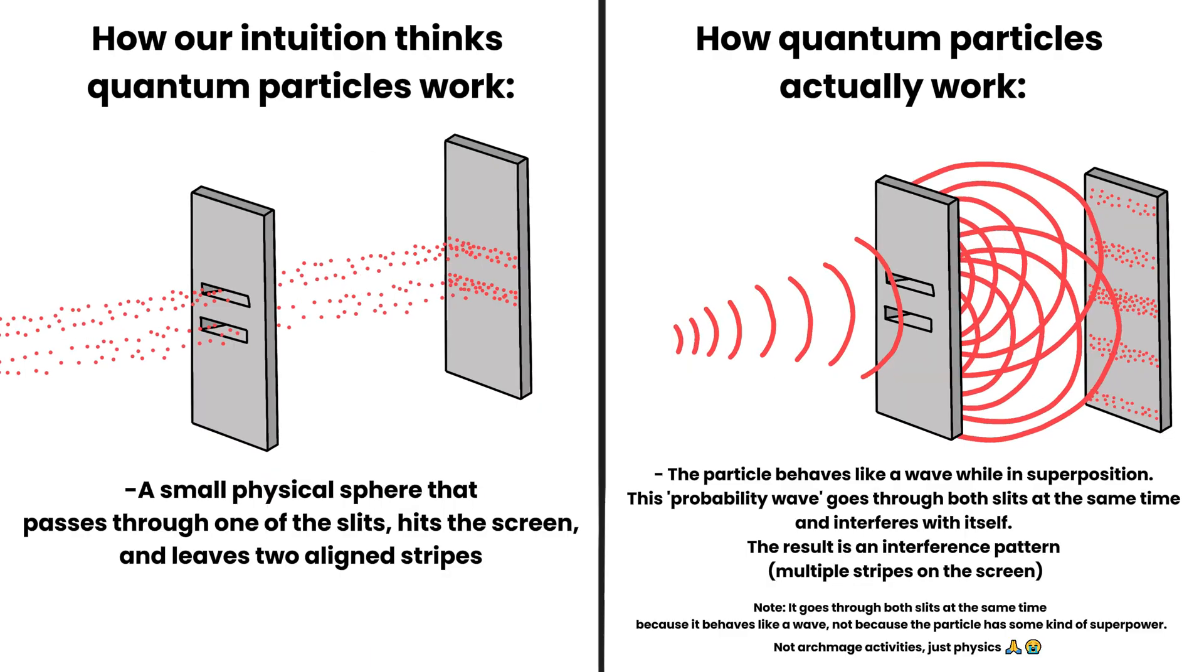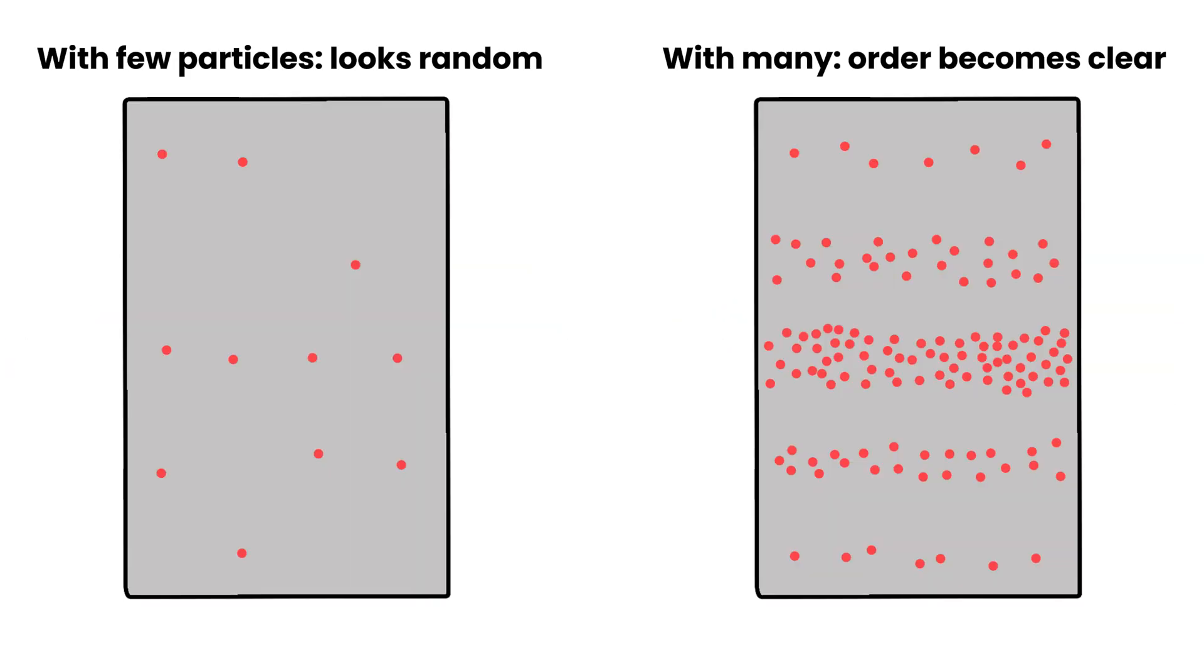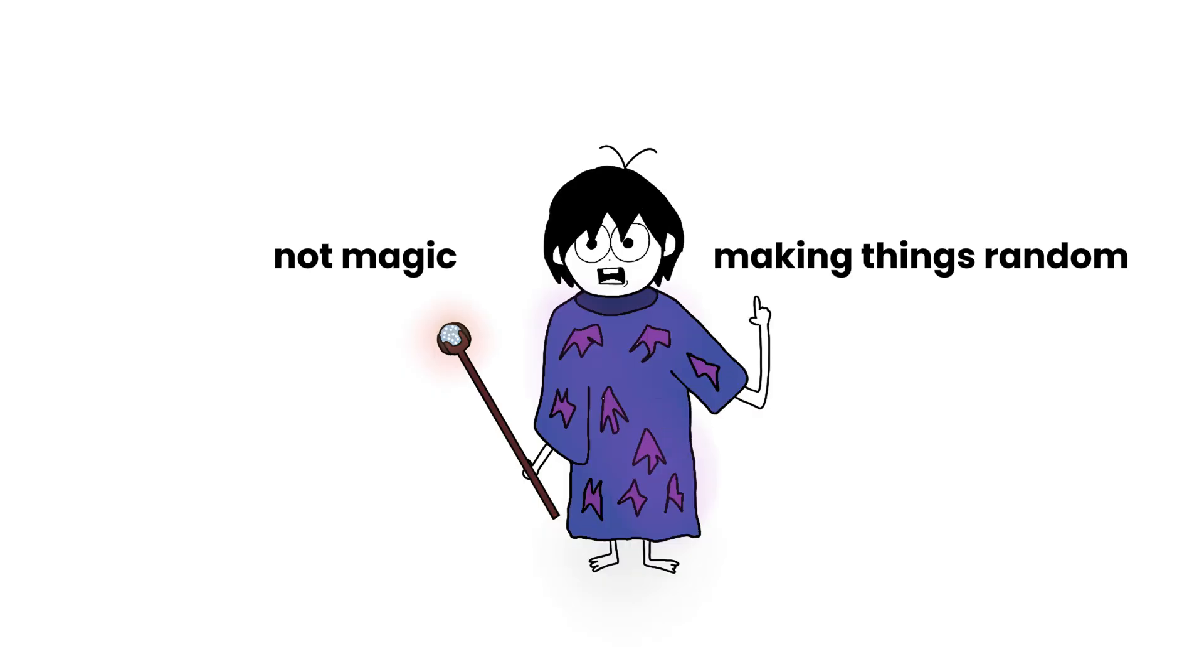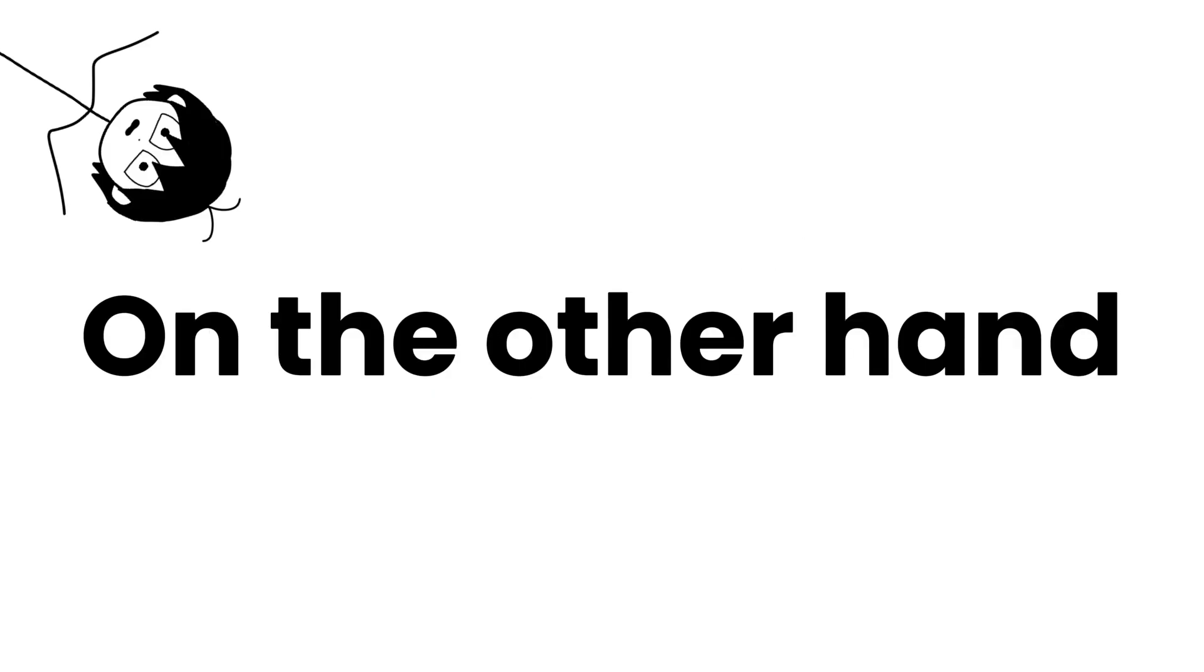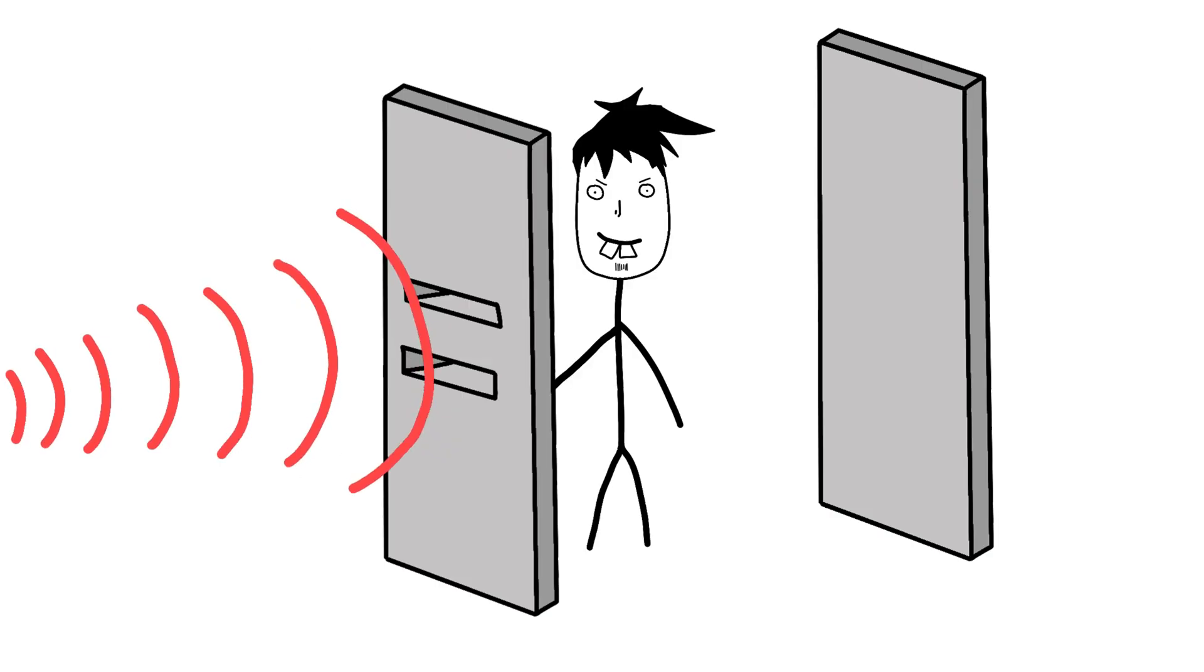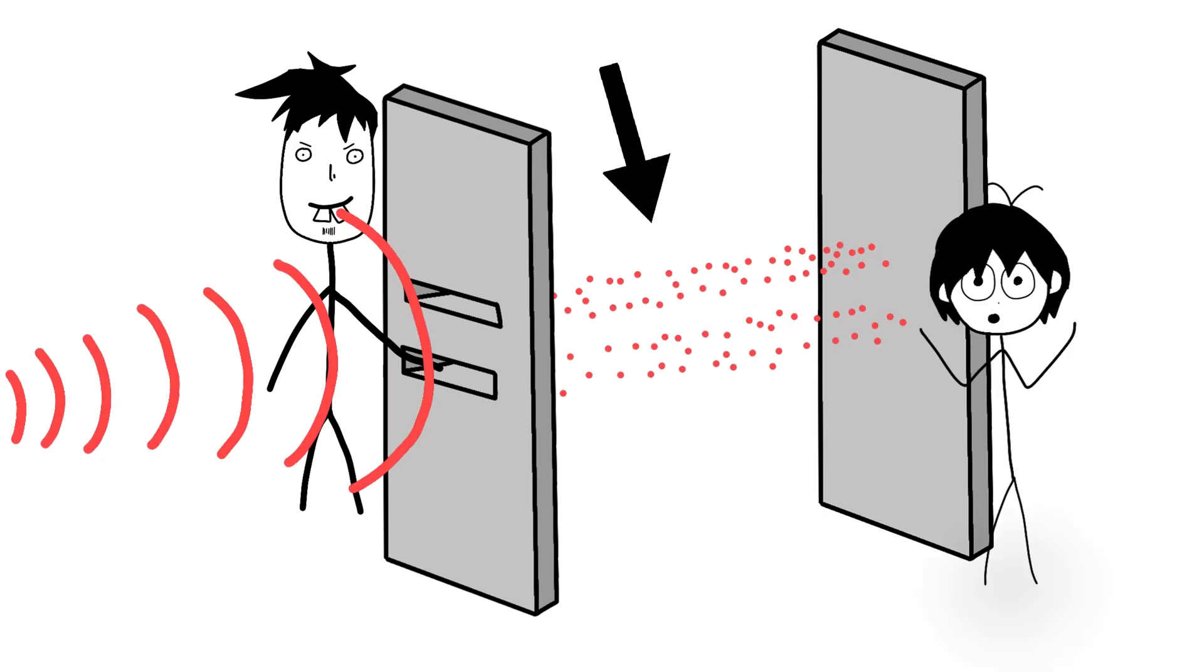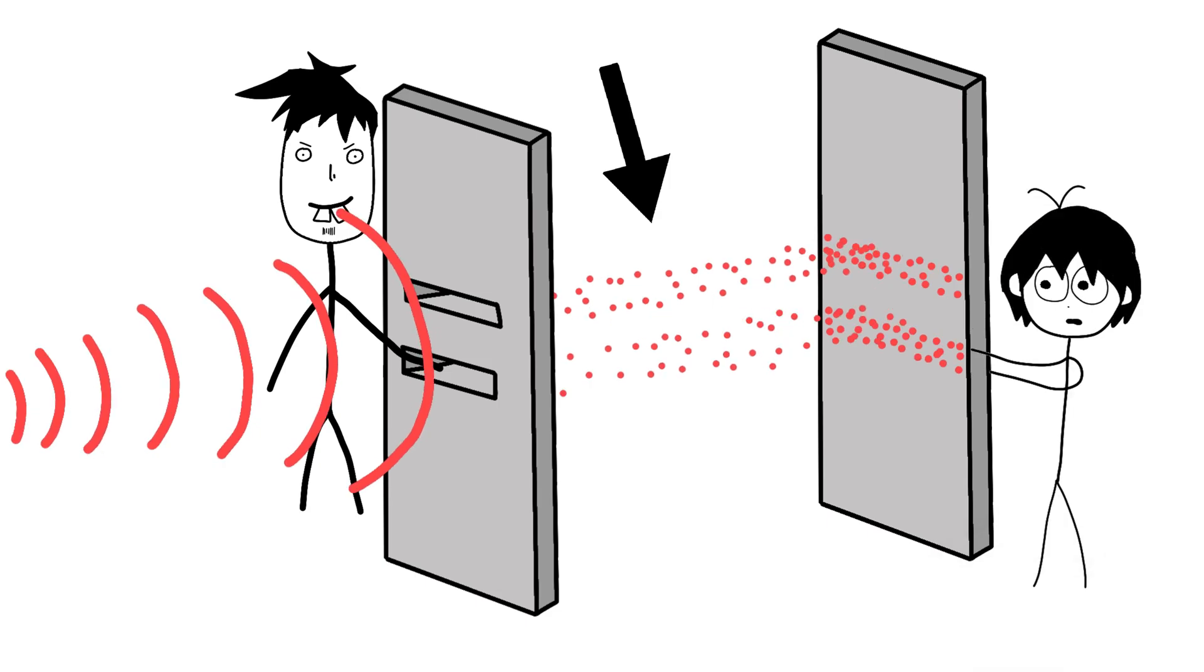Almost like the particle didn't go where it was supposed to. But the more particles you shoot, the more it becomes clear that there's order in the system, not magic making things random. On the other hand, if there is measurement, meaning some interference before or after the particle passes through the slits, it loses its superposition and stops behaving like a wave. It acts like a classical particle instead, creating a more intuitive pattern on the screen.